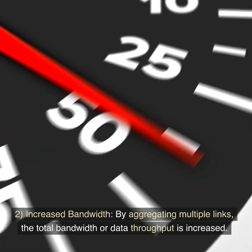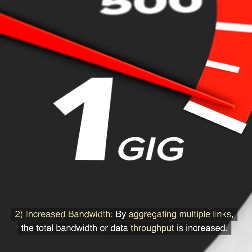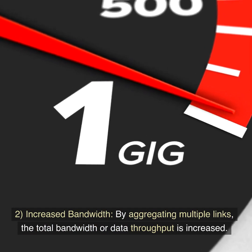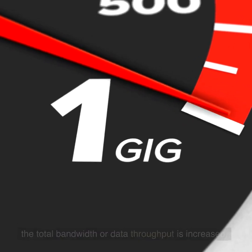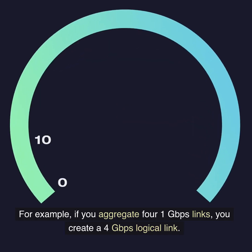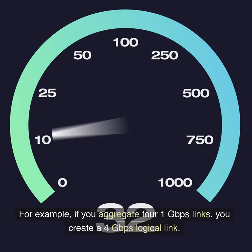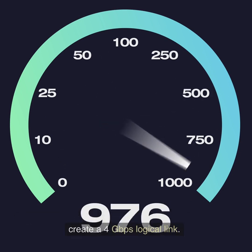2. Increased Bandwidth: By aggregating multiple links, the total bandwidth or data throughput is increased. For example, if you aggregate four 1 gigabit per second links, you create a 4 gigabits per second logical link.